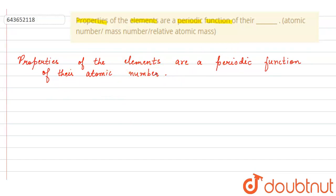If the elements are arranged in increasing order of their atomic number, then after a fixed interval, the properties of the elements start repeating. That is why it is said that the properties of the elements are a periodic function of their atomic number.